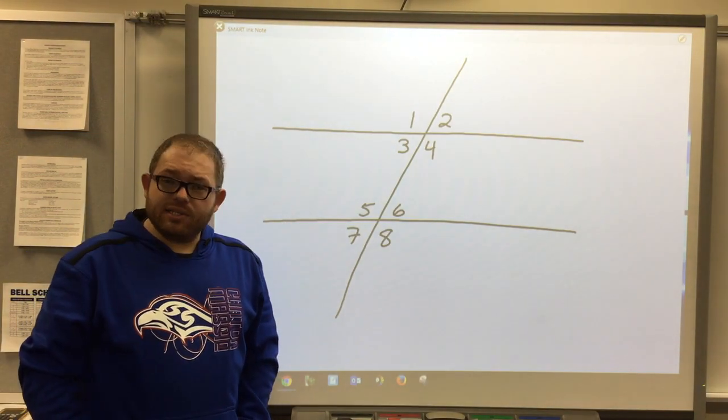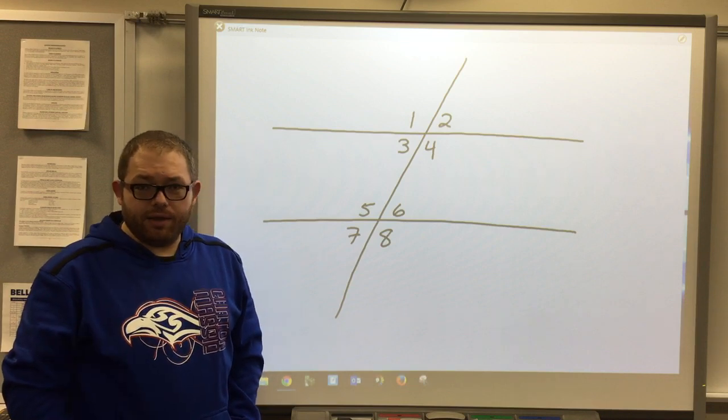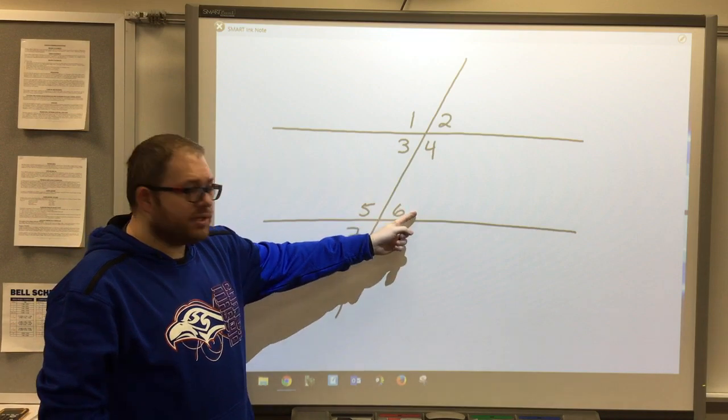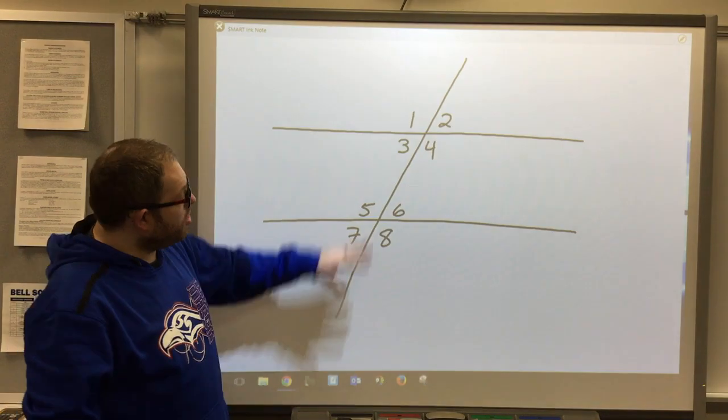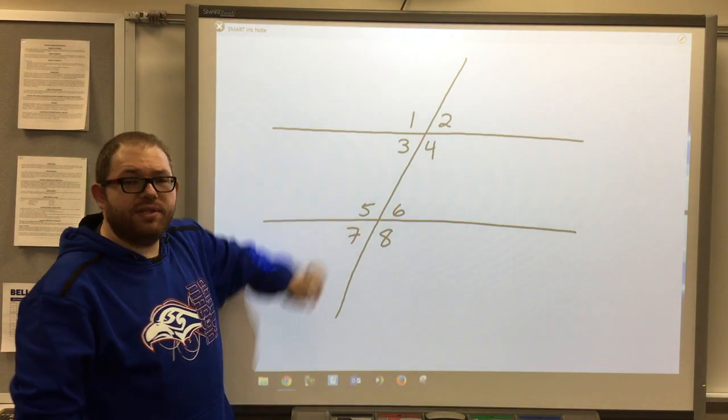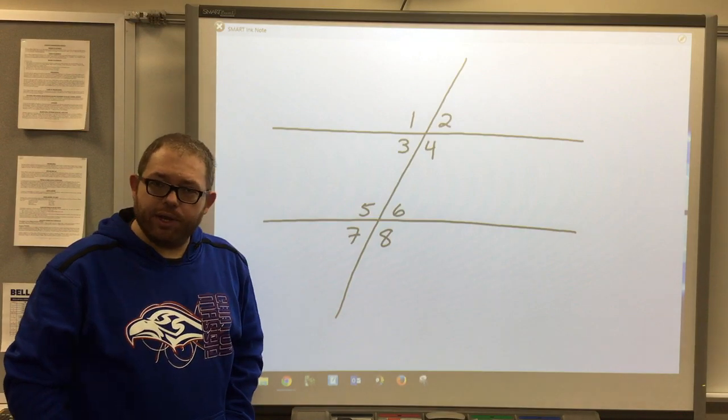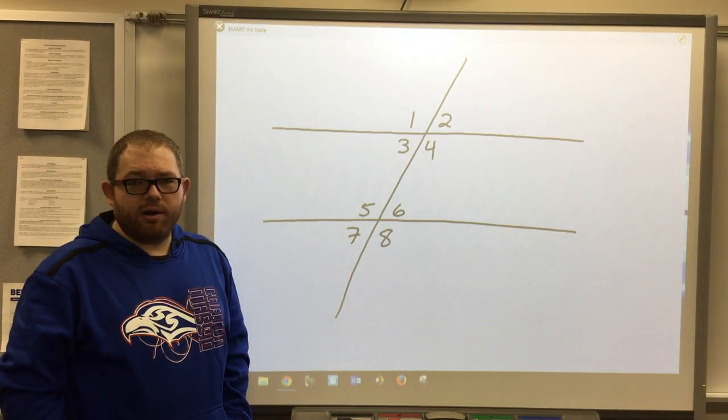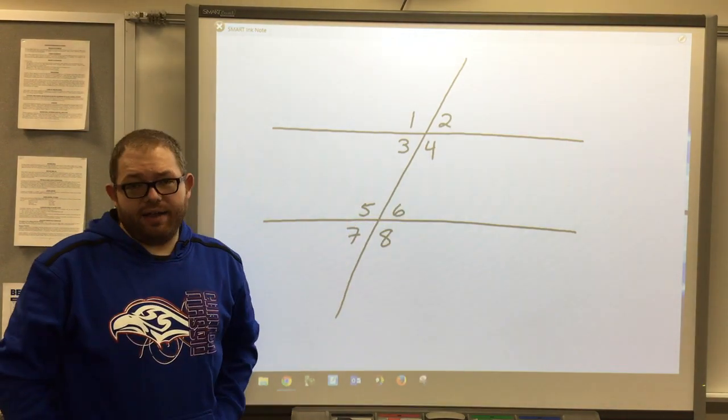Now the next type we'll talk about are alternate interior angles. Three and six are on the left and right of the transversal, but they're on the inner portion of the diagram. So they're called alternate interior angles. There's also only one other pair of those, and that's angle four and angle five.